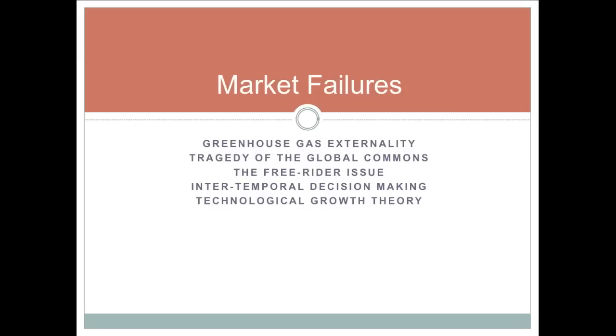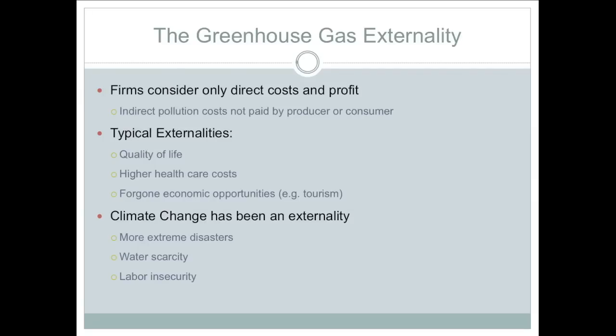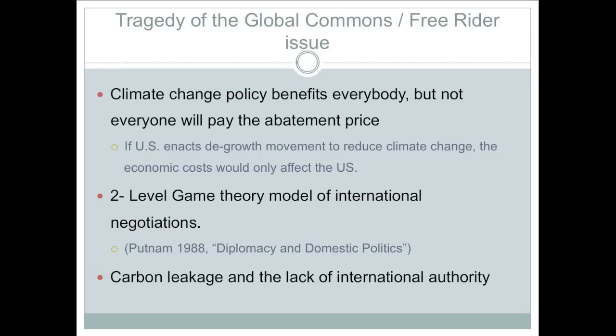Now we will take a look at some of the market failures associated with climate change and climate change policy. First, greenhouse gases are an externality on the economy. Firms only consider direct costs and profits of production and do not consider the indirect costs on the economy. As a result, these indirect costs are not incurred by the producer nor by the consumer, resulting in a quantity of pollution that is not socially optimal. The second market failure is the tragedy of the global commons, or the free rider issue. Climate change policy benefits everybody, but not everyone will pay the cost of abatement. For example, if the U.S. enacts a degrowth movement to reduce the effects of climate change, the economic costs of degrowth will only affect the U.S., yet the entire world benefits from the American climate change policy.